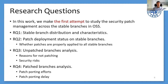Therefore, we aim to perform the first measurement to study this question. In general, we study four research questions. First, we study stable branch distribution and explore their characteristics in terms of maintenance time and code commits. Second, we measure patch deployment data on stable branches. Third, we analyze unpatched branches, investigating reasons for not deploying appropriate patches and the potential security risks. Finally, we investigate patched branches and measure the efforts and time delay during patch porting.